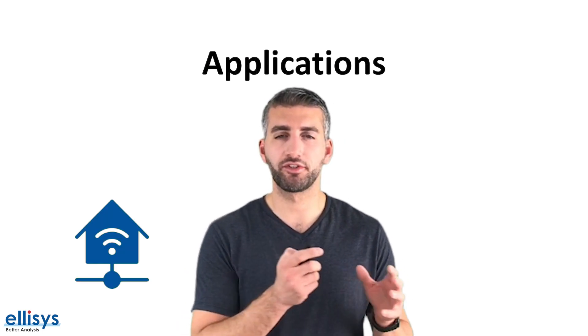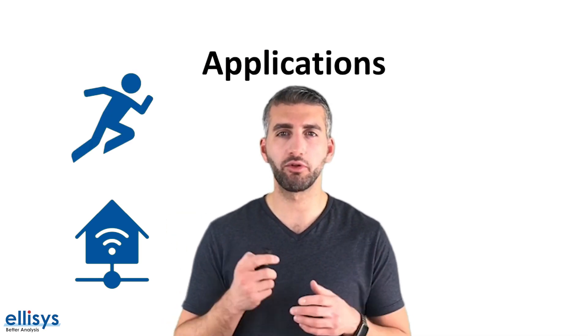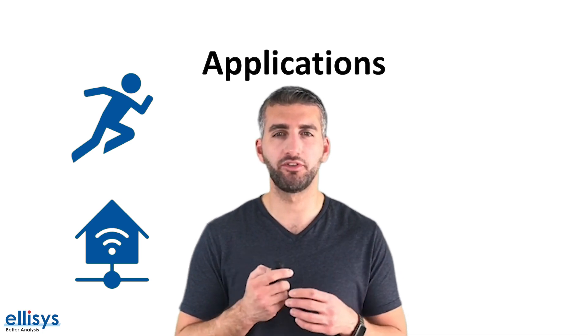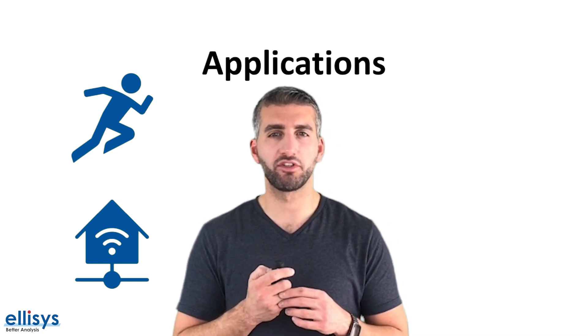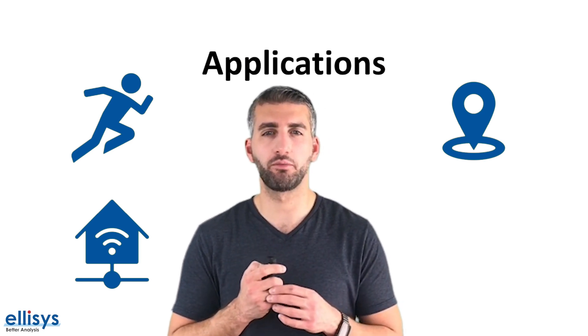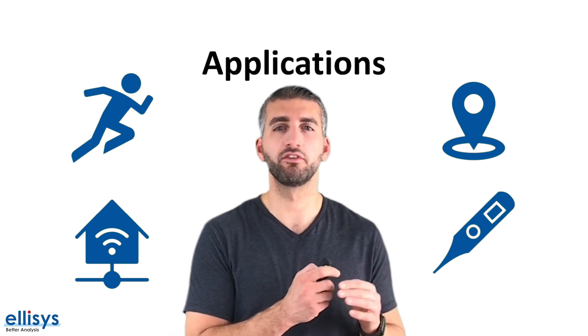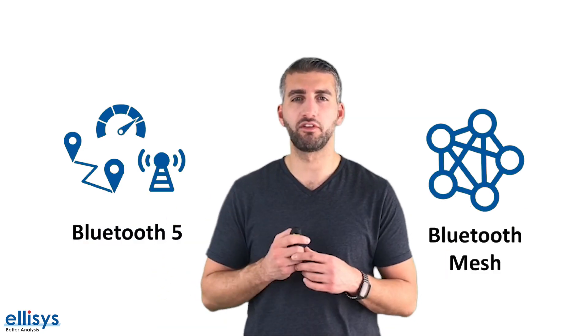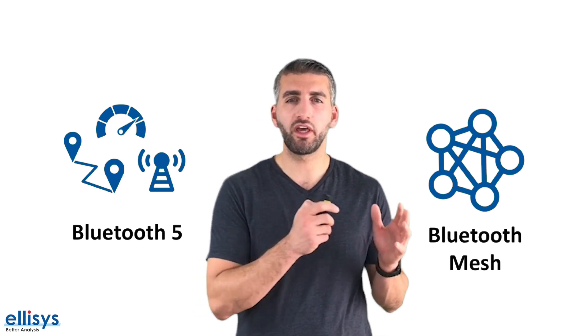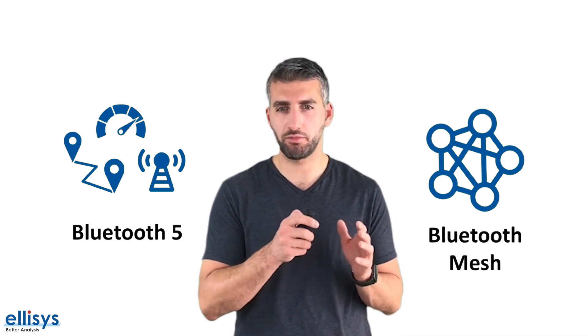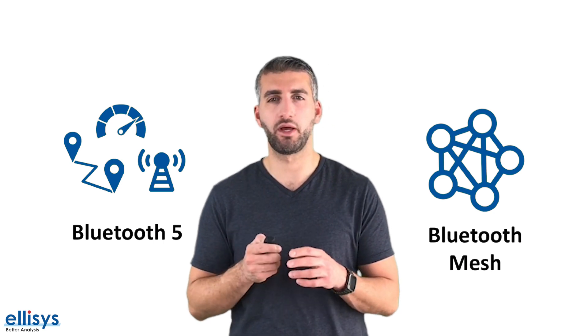So what are some of the applications of BLE? Some of the most common ones include home automation applications such as a smart door lock, a smart appliance, or a lighting system. Another application is in fitness devices such as wearables, trackers, and pedometers. One interesting application is indoor location technology where GPS may not be feasible. And last but not least, medical devices and personal health devices. With the recent release of Bluetooth 5 and Bluetooth mesh, BLE has even more feasible applications, especially in home automation and industrial settings.